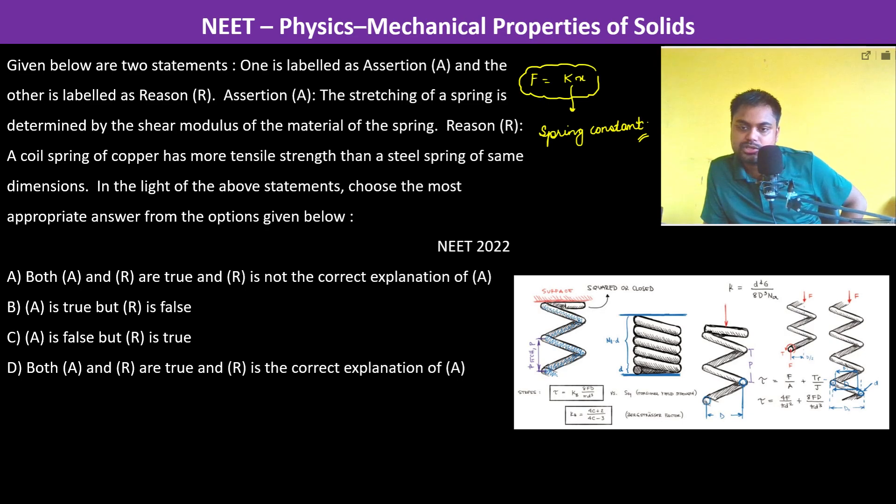Here what they are mentioning is G. This is a diagram where you can see the calculation is a little complex, beyond the scope of our syllabus, but G is involved there. G is the shear modulus, and this is the spring stiffness k. So yes, it is dependent upon the shear modulus of the material.